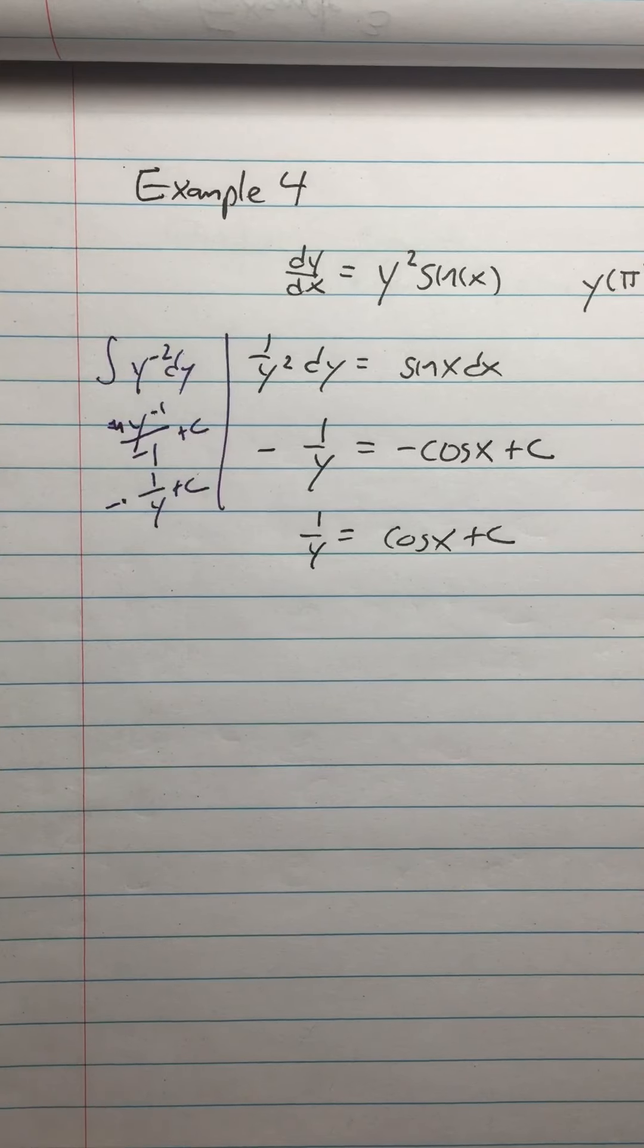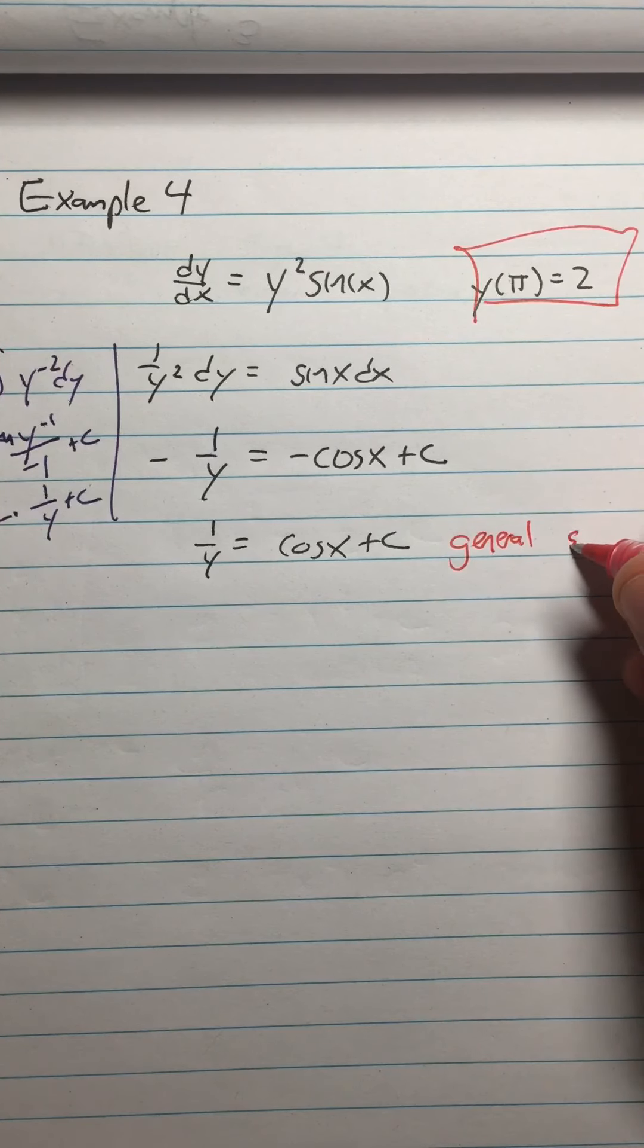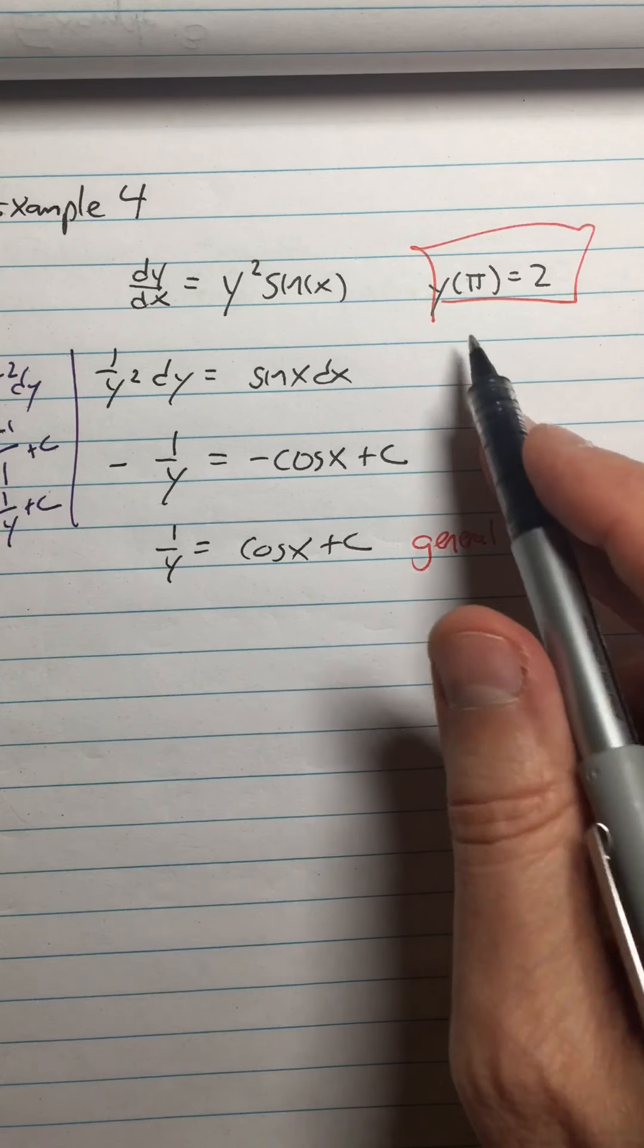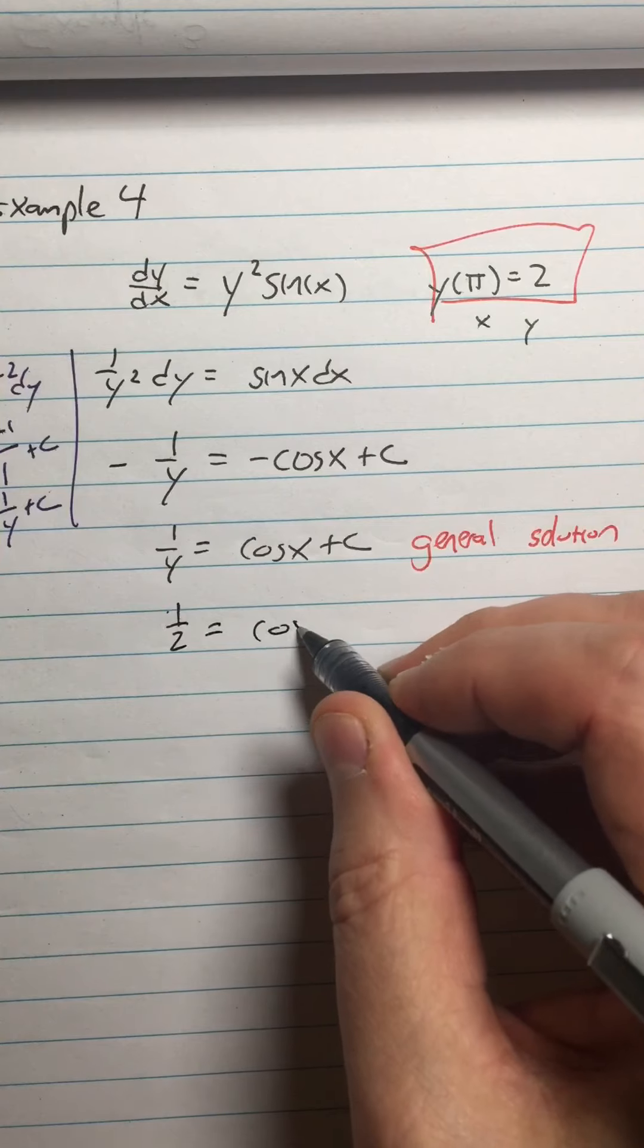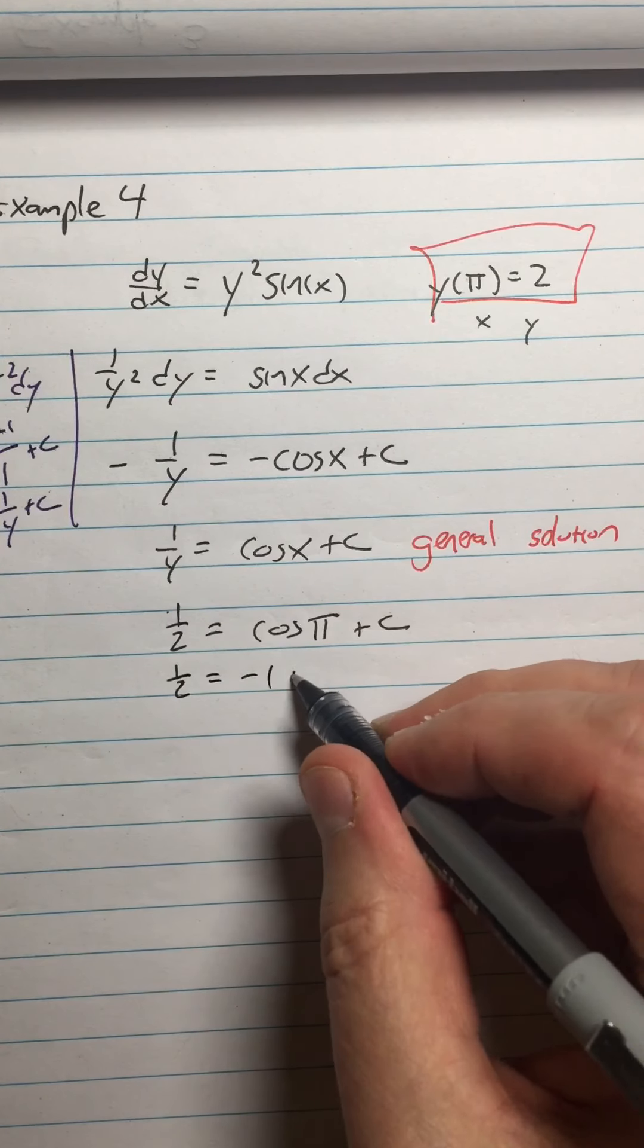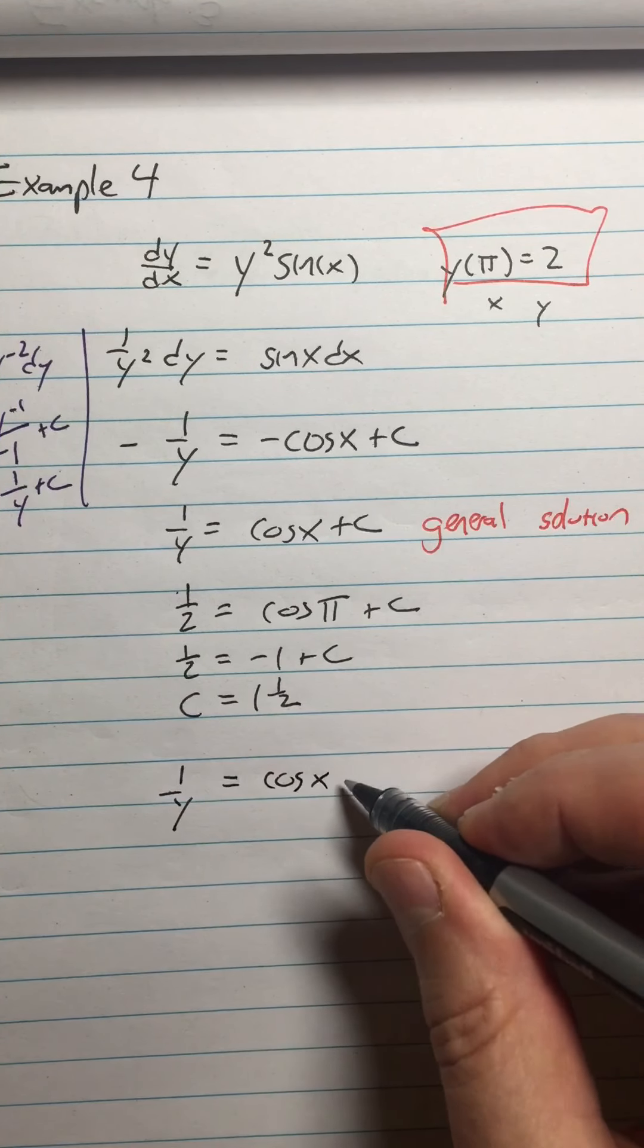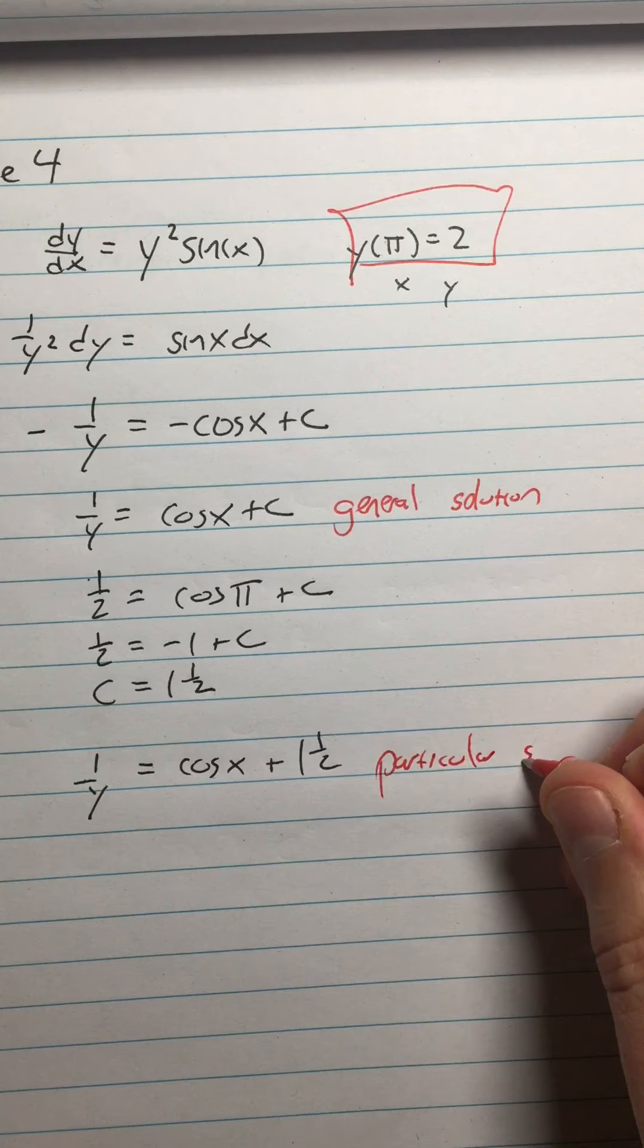Anyway, this is our general solution, but anytime we have a given point, we're going to get the particular solution as well. I mean, that should be in the directions that will say something like, you know, solve the initial condition problem. What am I doing? Oh yeah, I'm plugging in y of pi equals 2. This is my x, this is my y. So 1 over 2 equals cosine of pi plus c. I solve it for c. 1 half equals negative 1 plus c. c equals 1 and a half. I'll call it 1.5 if you want. Then plug back into my original equation. 1 over y equals cosine x plus 1 and a half. That is your particular solution.